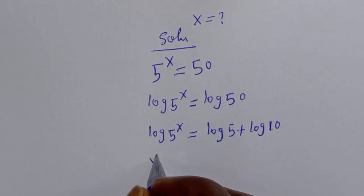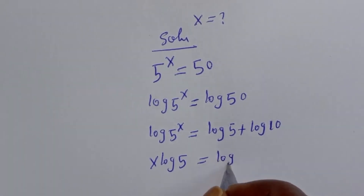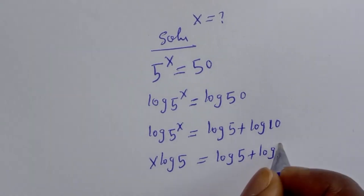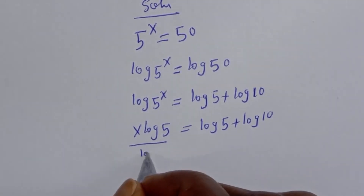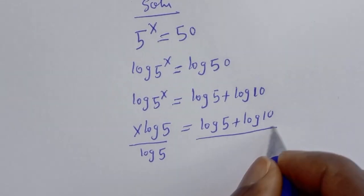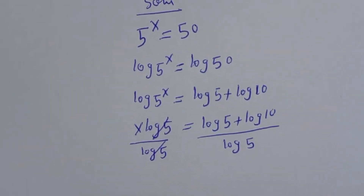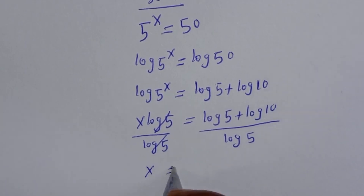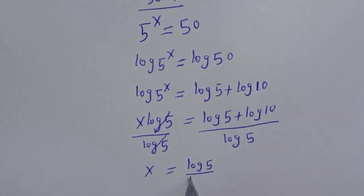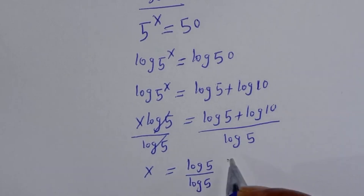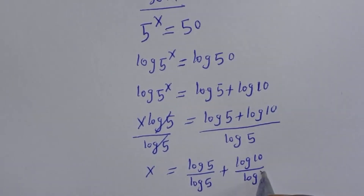Then s log 5 is equal to log 5 plus log 10. Let's divide both sides of this equation by log 5, divided by log 5. S will be equal to log 5 over log 5 plus log 10 over log 5.